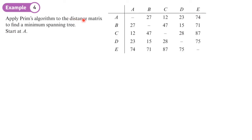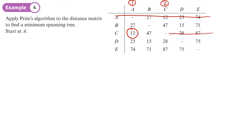We apply Prim's algorithm to this distance matrix to find a minimum spanning tree, starting at A. We number column A as one, then delete row A. We look in column one and find the lowest value and circle it — that's C with a value of 12, the lowest in that column. So we go to column C, label it two, and delete row C, without deleting the number we've circled.